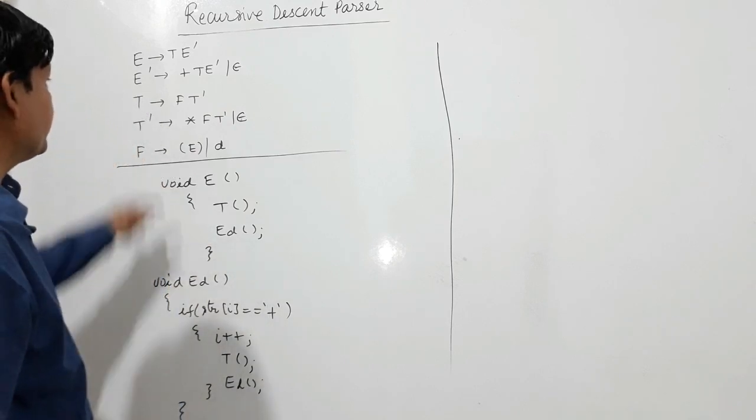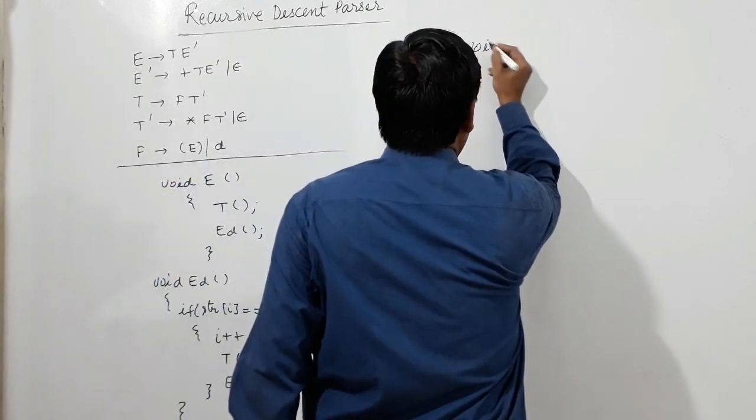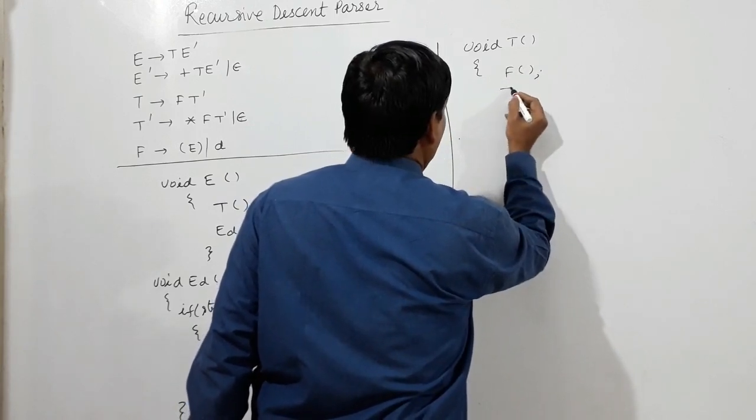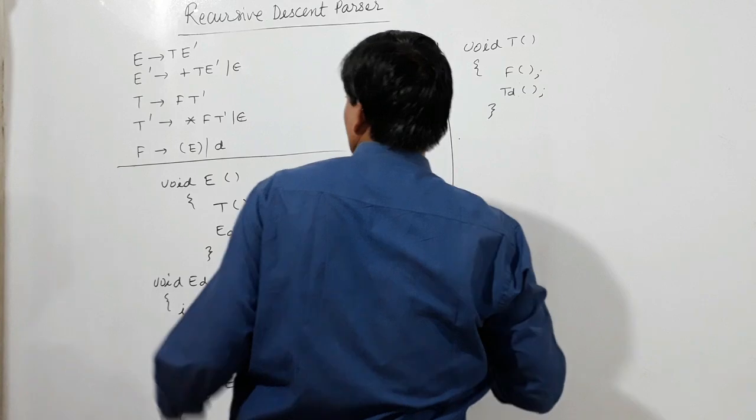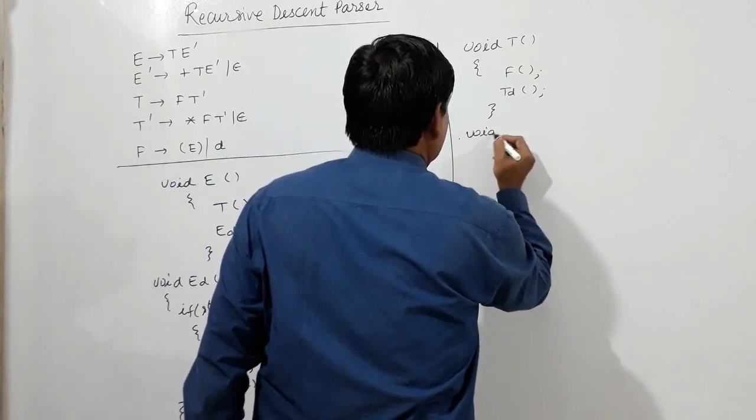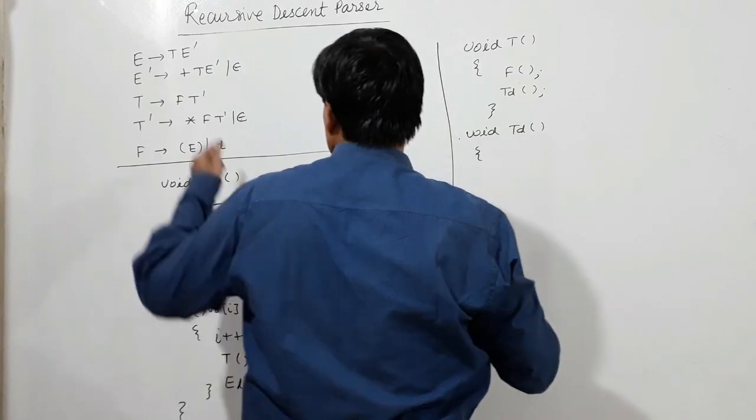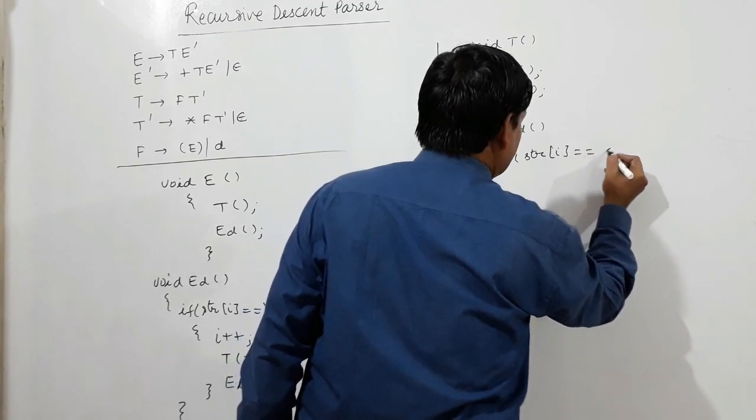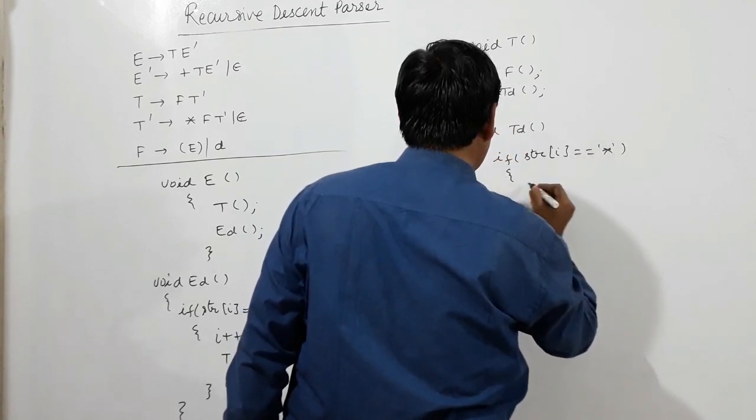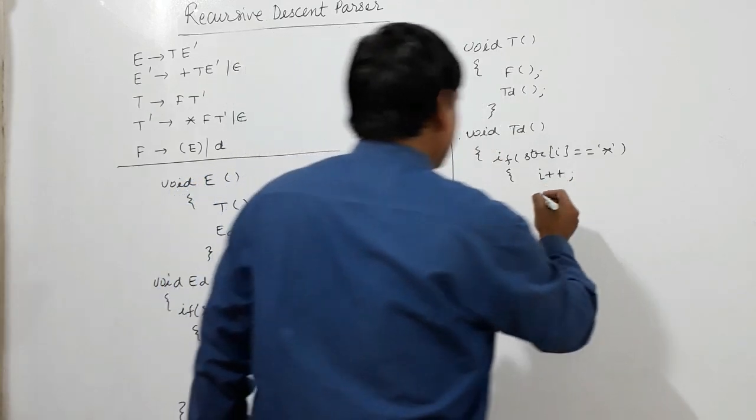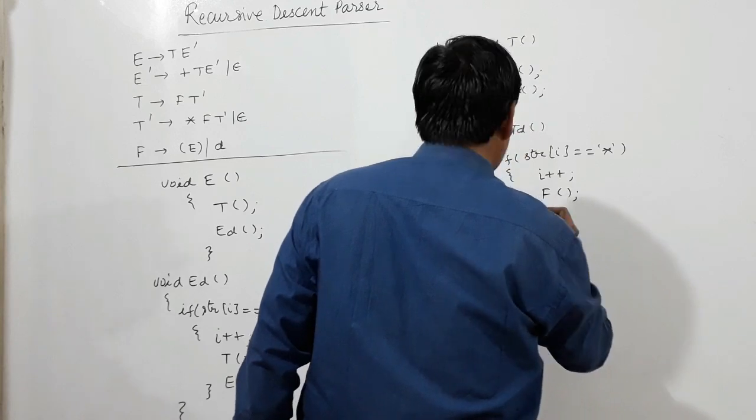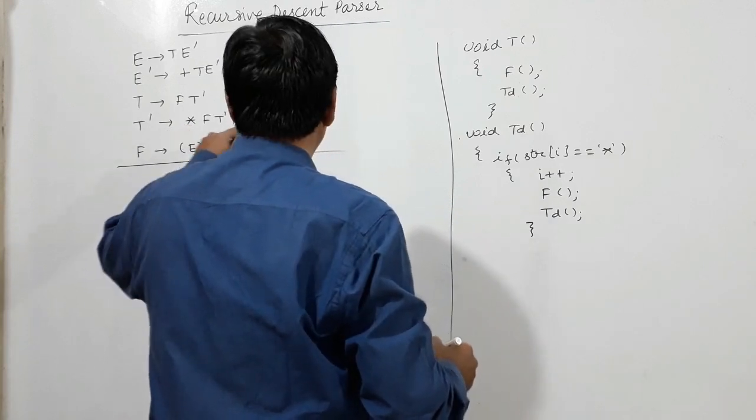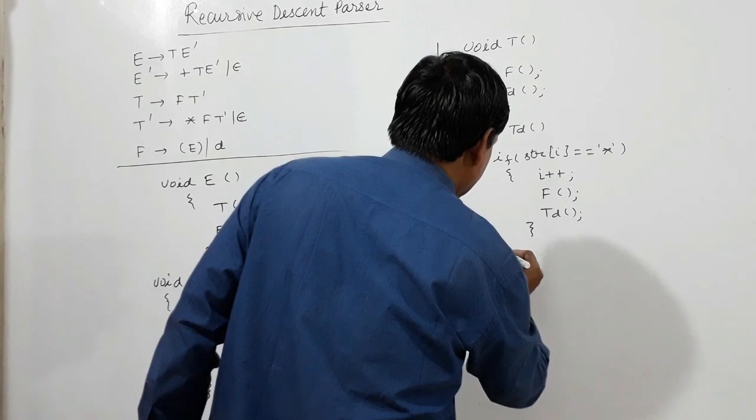Now what T is doing, void T, T is calling F, later T dash is called. So I'm writing TD, what TD is doing, void TD. If str i is equal to star, if i is increasing by one then F is being called, later T dash is being called here. If it's not starting with a star then epsilon means nothing has to be done.